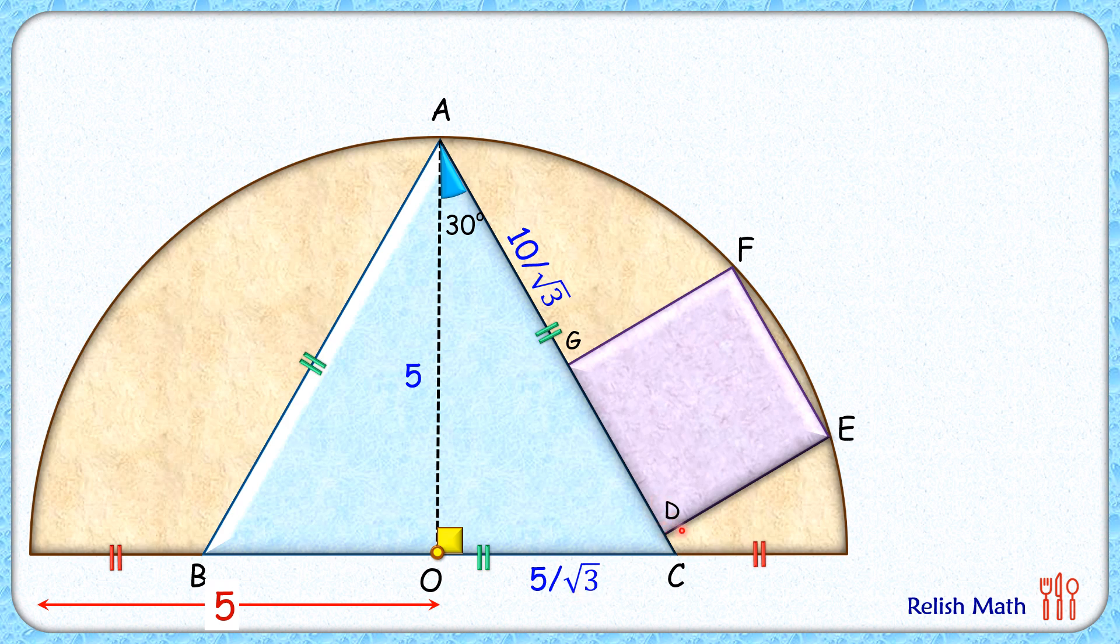Now let's check this square. Let's assume the side length of the square is x centimeters. Now FE is the chord in the semicircle, and we know that the perpendicular from the center on a chord bisects the chord, so FH and HE will be x by 2 each. Let's join FO here.